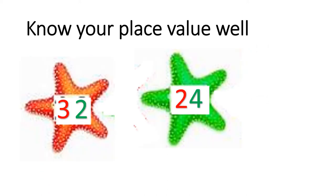Now how about the red star? The number is 32. What's the number for the green star? It's 24. Can you tell me about the place value? Look at the red star: 3 is in the place value 10, and 2 is in the place value 1. Now look at the green star: 2 is in the place value 10, and 4 is in the place value 1.